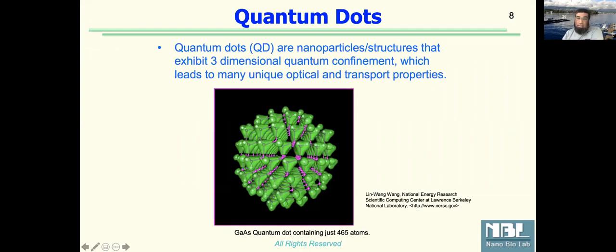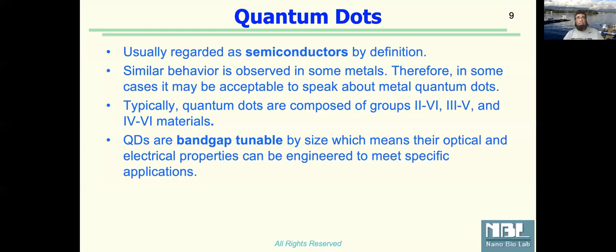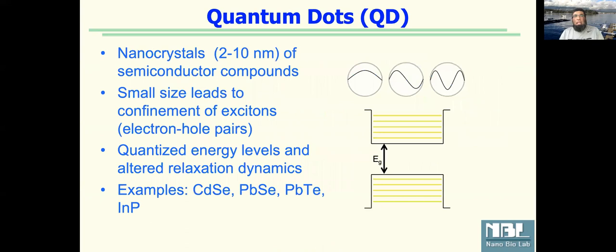This is a simulation showing a gallium arsenide quantum dot with only 465 atoms. We are talking about just a few hundred or even less than that. They are semiconductors. Their behavior is that they would be composed of two-six or three-five material, and we can adjust their band gap by adjusting their size. That's what it is about.